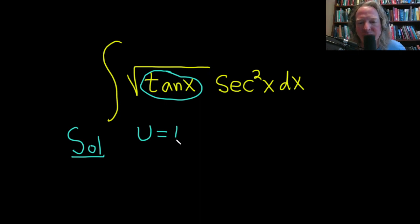If we let u be equal to the tangent of x, then du, taking the derivative of both sides, well the derivative of tangent is secant squared, so this will be secant squared x dx.